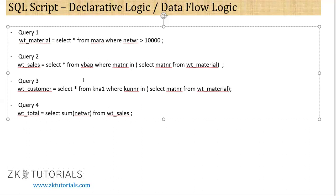Don't get confused here. The next question is: can you run query 3 before query 1? No. Because again, when you run query 3, you can see it is selecting data from there — without query 1, you cannot run this. Can you run query 2 and query 3 parallely? Yes. After processing query 1, query 2 and query 3 can be processed in parallel because they are not dependent on each other.